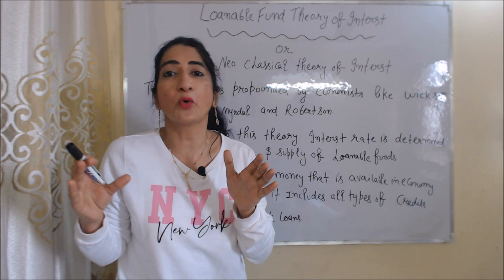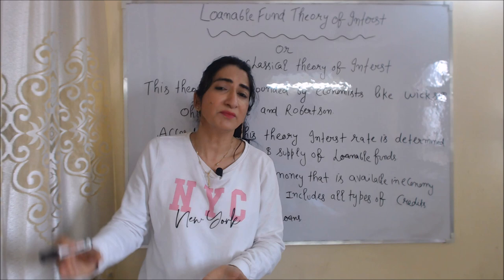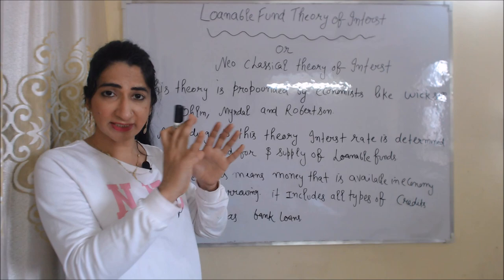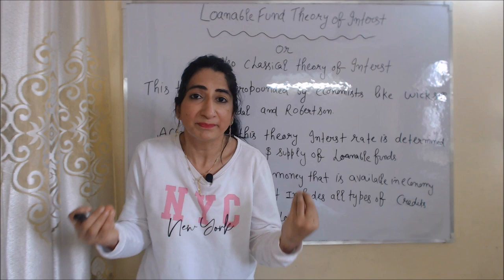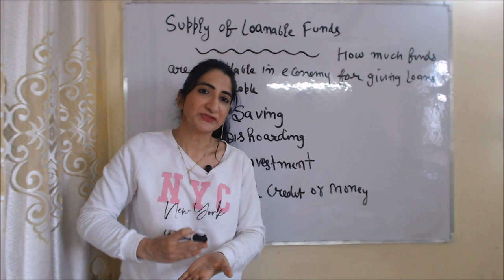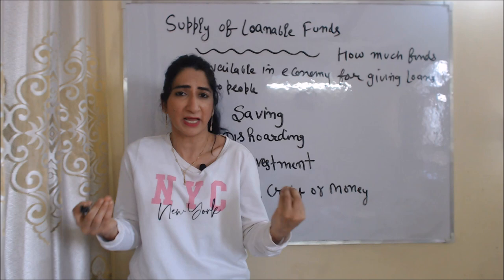According to this theory, interest rate is determined by demand for loanable funds and supply of loanable funds. Loanable funds means money that is available in the economy for borrowing — it includes all types of credit like bank loans. In this theory, we will discuss what is supply of loanable funds, what is demand for loanable funds, and the determination of interest rate.